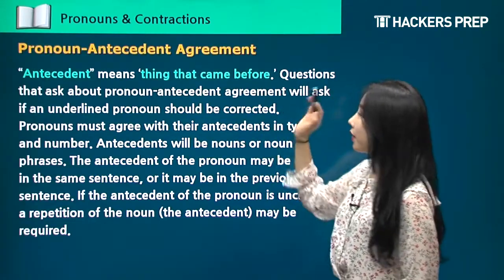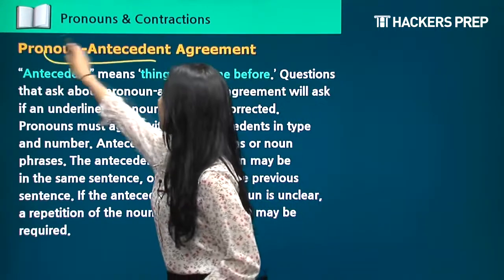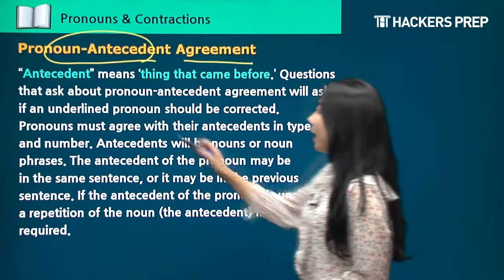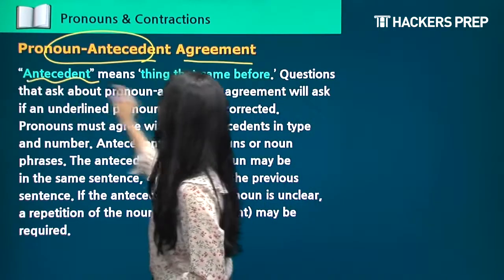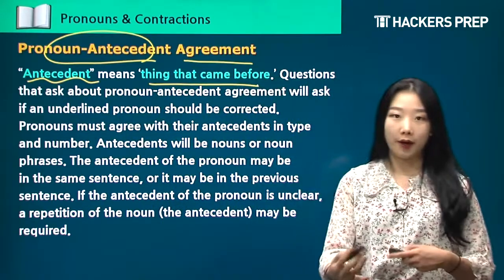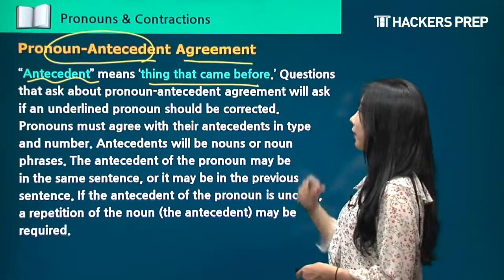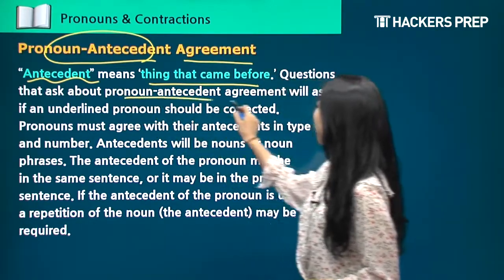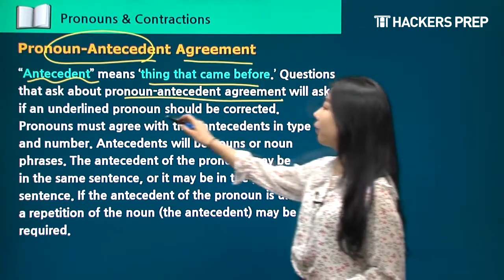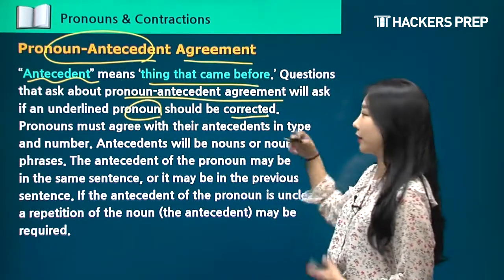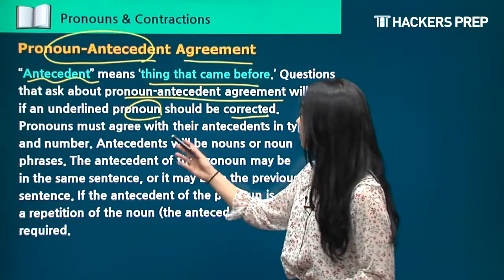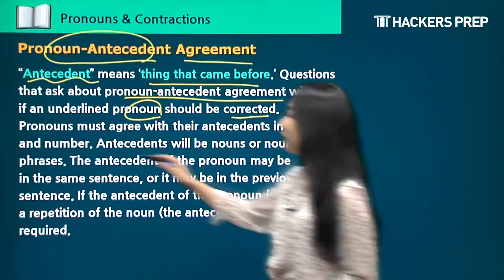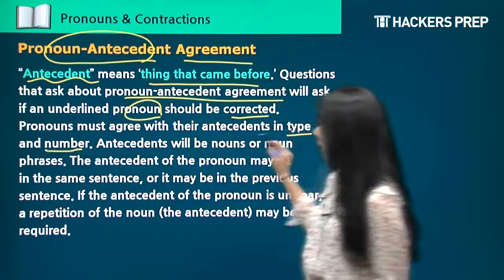Now, first of all, pronoun-antecedent agreement — that's the first part of the pronoun problem type. Antecedent literally means the thing that came before. Questions that ask about pronoun-antecedent agreement will ask if an underlined pronoun should be corrected. Pronouns must agree with their antecedents in type and number.